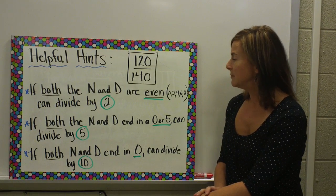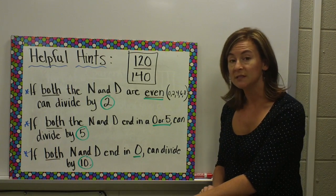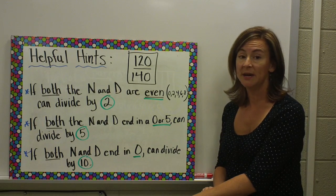If both the numerator and the denominator are even, they end in 0, 2, 4, 6, or 8, then you can divide both of those by 2.